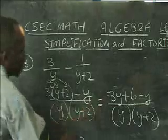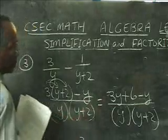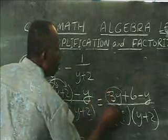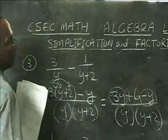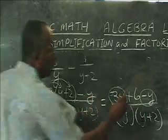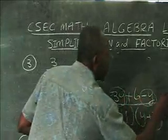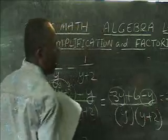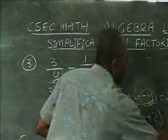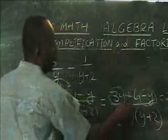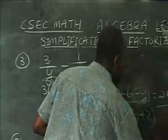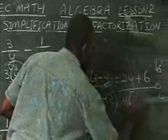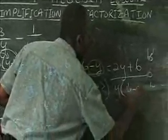We look at what we have to see if there's anything to combine. We have 3y and minus y — three of a quantity, taking out one, which leaves us with two y. Then we have plus six, and that is over the LCM which is y(y plus two).